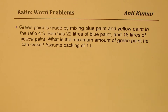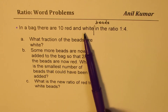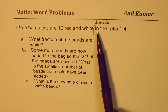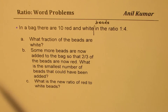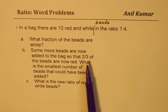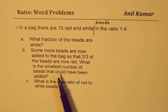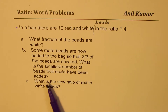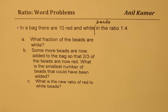The last question: In a bag there are 10 red and white beads in the ratio of 1 to 4. What fraction of beads are white? Some more beads are now added to the bag so that two-thirds of the beads are now red. What is the smallest number of beads that could have been added? Part C: What is the new ratio of red to white beads?